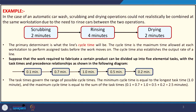With a simple example, you can understand the meaning of balancing. We have 3 operations: scrubbing, rinsing, and drying. Scrubbing takes 2 minutes, rinsing takes 4 minutes, and drying takes 2 minutes. These 3 operations take different amounts of time. The primary determinant here is what is the line's cycle time — the first important thing is cycle time determination.